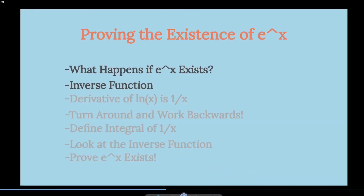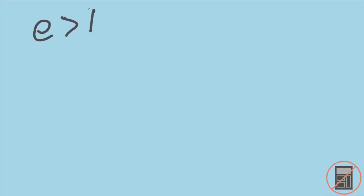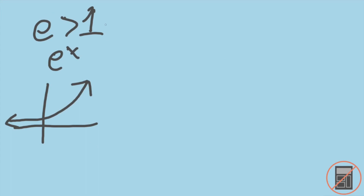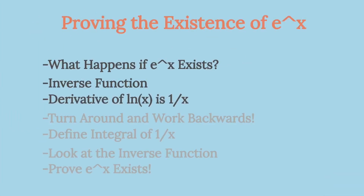Now let's look at the inverse function, the natural log of x. Since we know that e is greater than 1, we know that e to the x is going to be a strictly increasing function, being an exponential with base greater than 1. So we can take its logarithm, which we'll call the natural log of x. Next, we will show that the derivative of the natural log of x is 1 over x, as we expect.